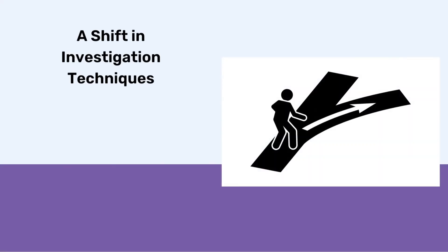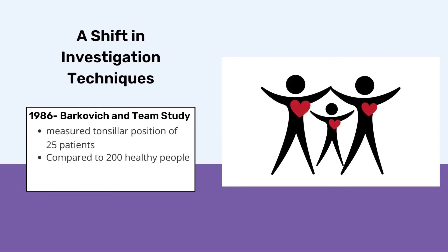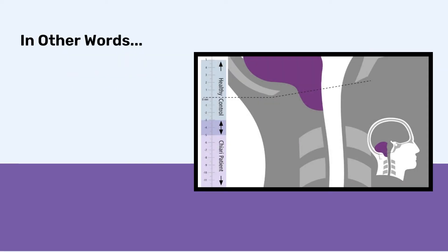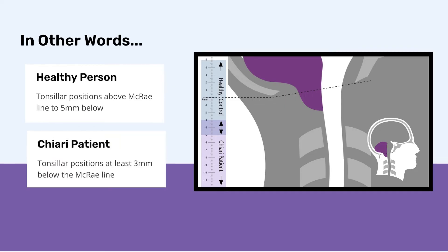Now that they were able to quantify Chiari malformations, researchers started studying them in a different way. In 1986, Barkovic and a team published a study which measured the tonsillar position of 25 patients with what they determined to be clear signs and symptoms of Chiari, and compared them to 200 healthy people. They found that the tonsillar position of the two groups overlapped between three to five millimeters. In other words, the healthy people had tonsillar positions from above the McCray line to five millimeters below, and the Chiari patients had tonsillar positions of at least three millimeters below the McCray line.